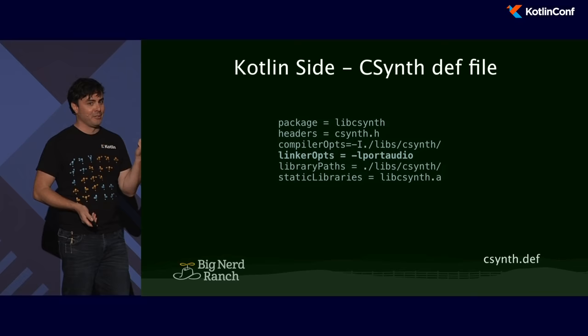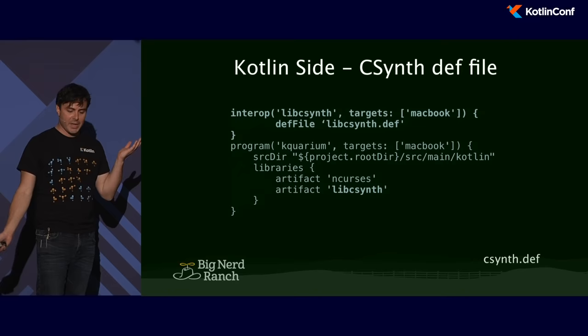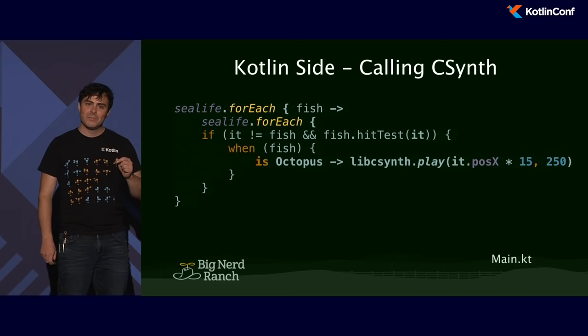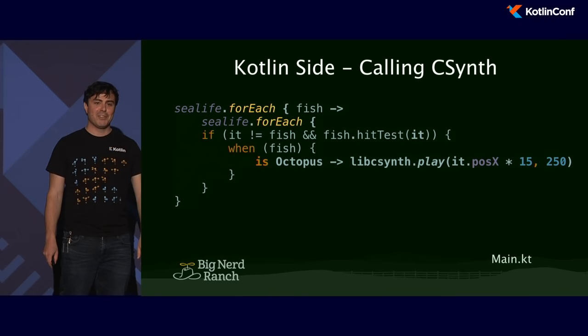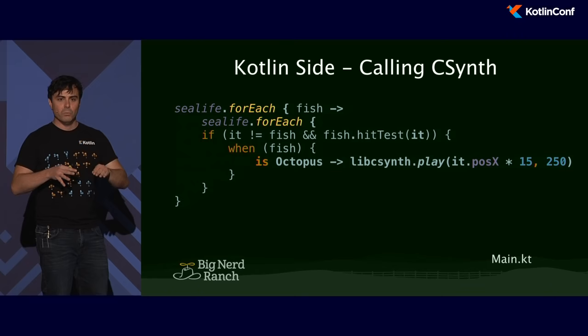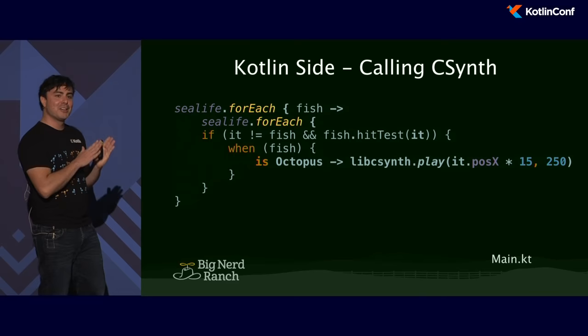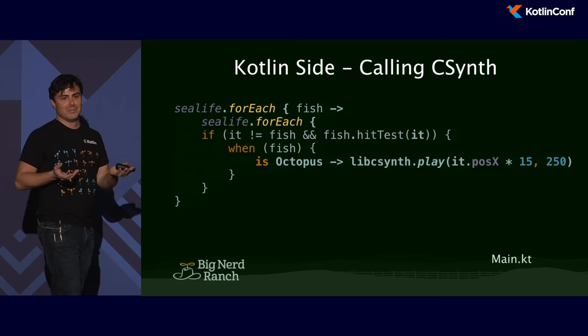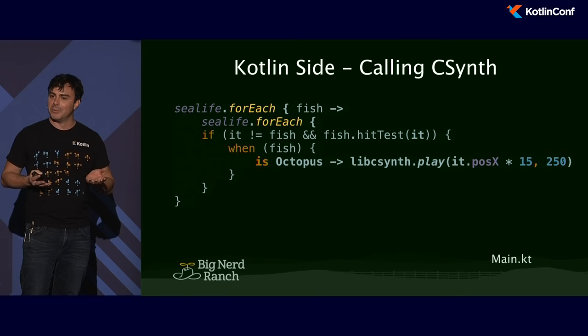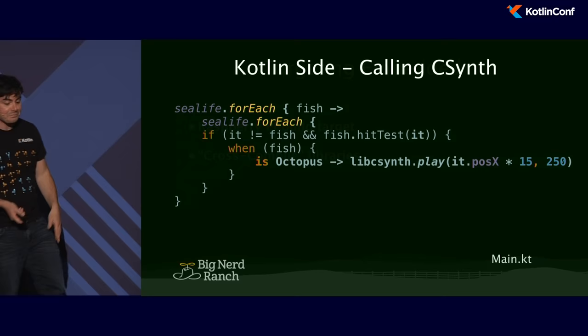Once I've defined that DEF file, I've got access to it. Now, back in my aquarium, I can actually use the fish themselves as an instrument. I've got an octopus in my aquarium — I'm going to use my CSynth lib to play a sound whenever the octopus collides with another fish. Let's run with the modular approach — we'll build our own instrument and turn our aquarium into an instrument.